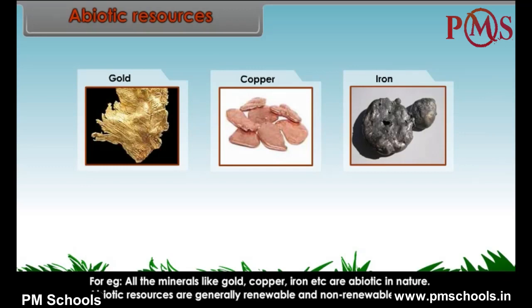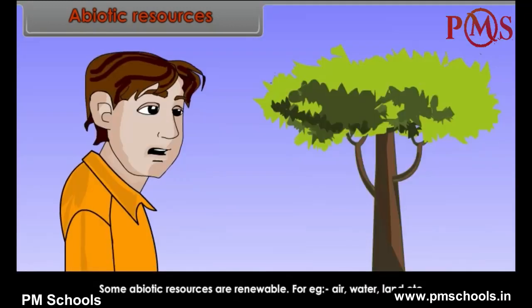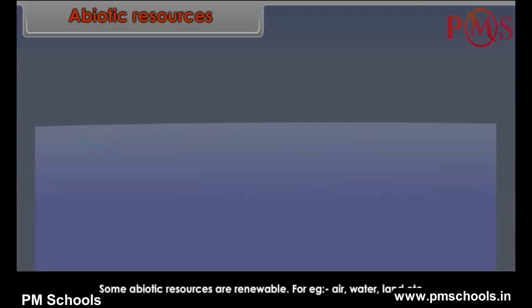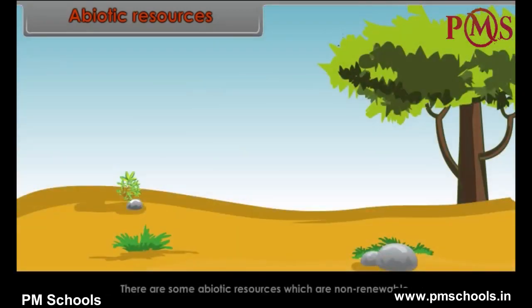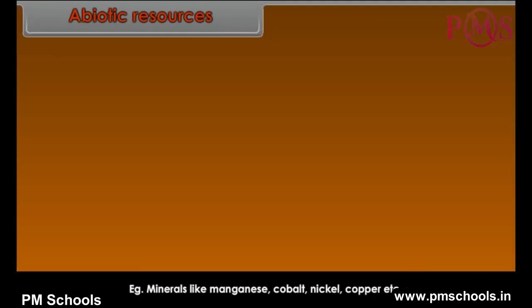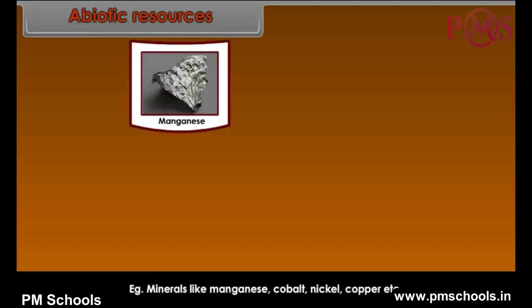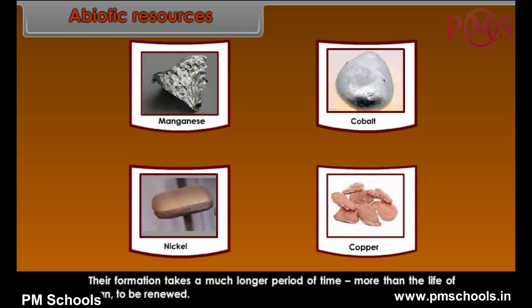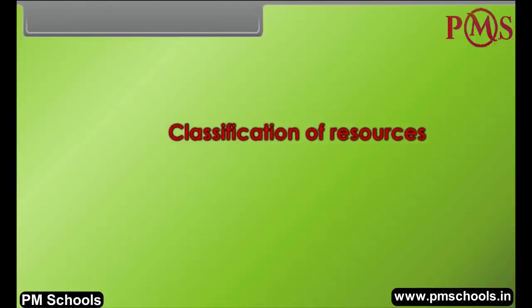Abiotic resources are generally renewable and non-renewable. Some abiotic resources are renewable, for example air, water, land, etc. There are some abiotic resources which are non-renewable, for example minerals like manganese, cobalt, nickel, copper, etc. Their formation takes a much longer period of time — more than the life of man — to be renewed.